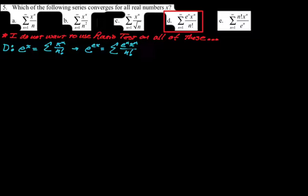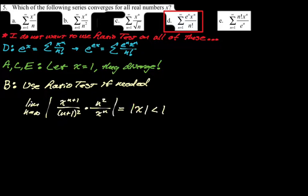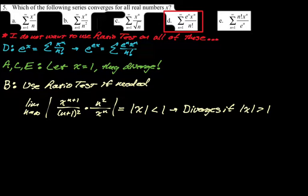To confirm: options A, C, and E — if you plug in x=1, you get 1/n (diverges), 1/n^(1/2) (diverges), and n!/e^n (diverges) respectively. So those can be eliminated. For B, the ratio test gives absolute value of x less than 1 for convergence — it definitely diverges when |x| > 1, so that's not the answer. The answer is D.